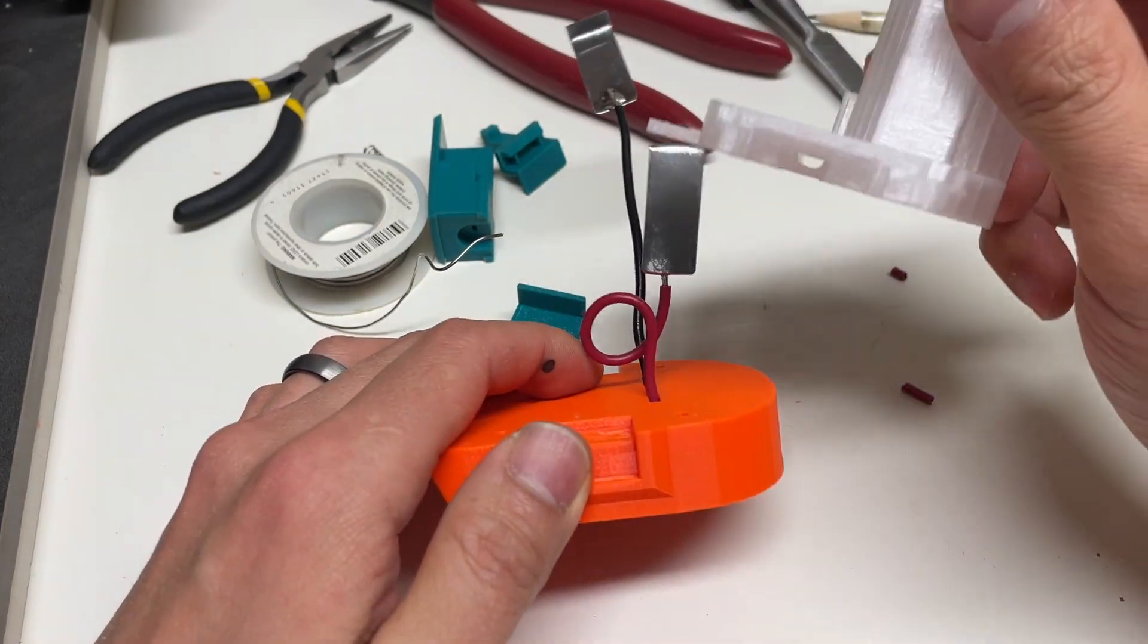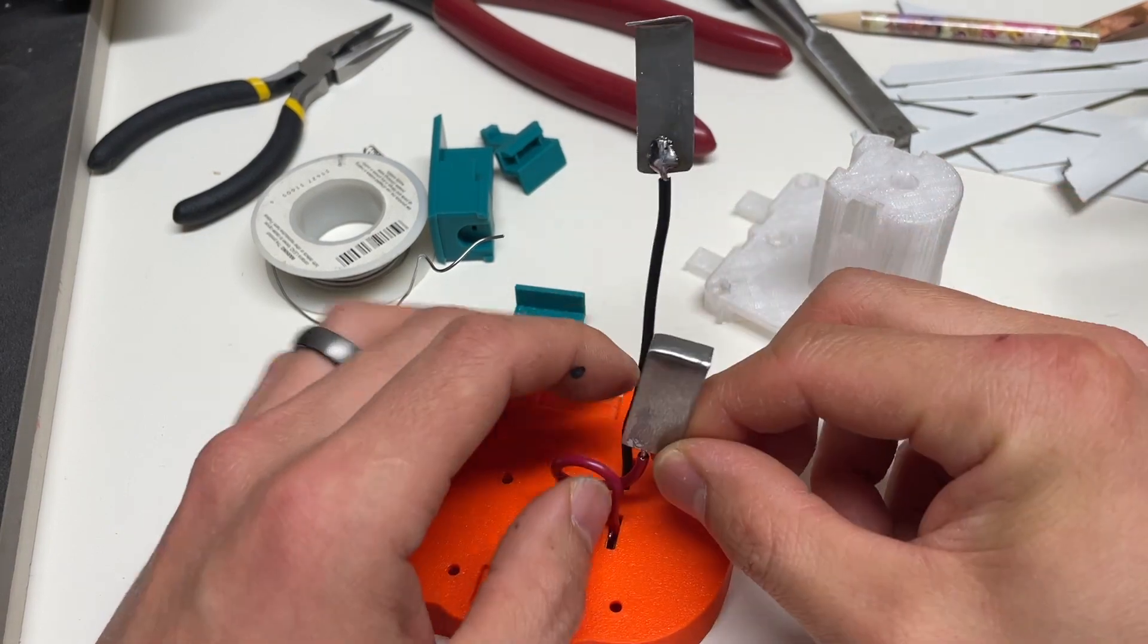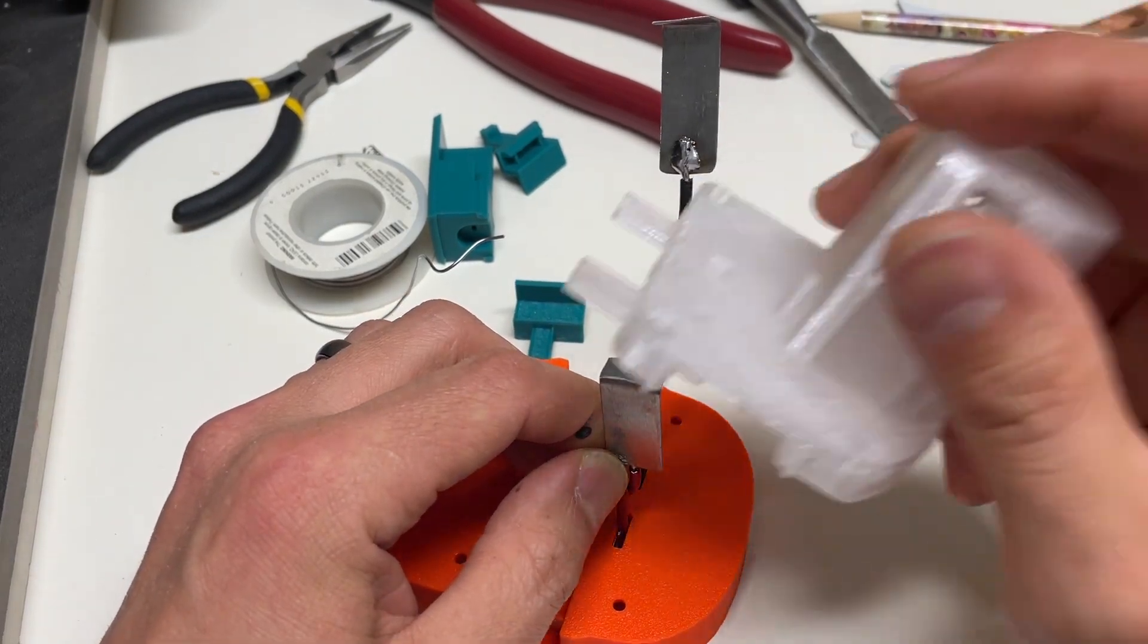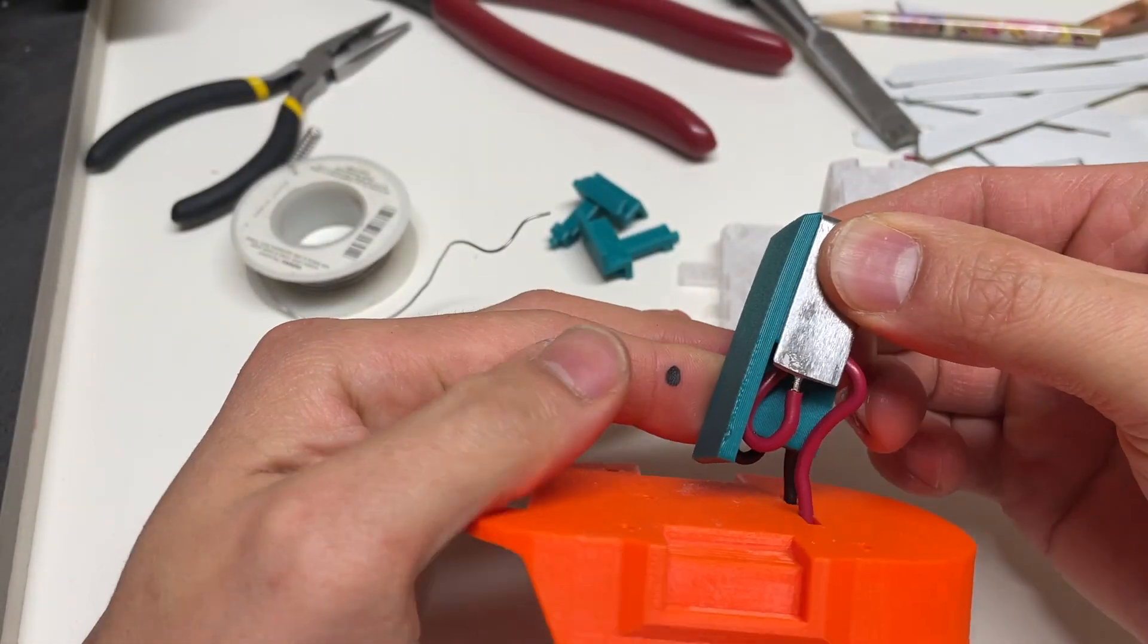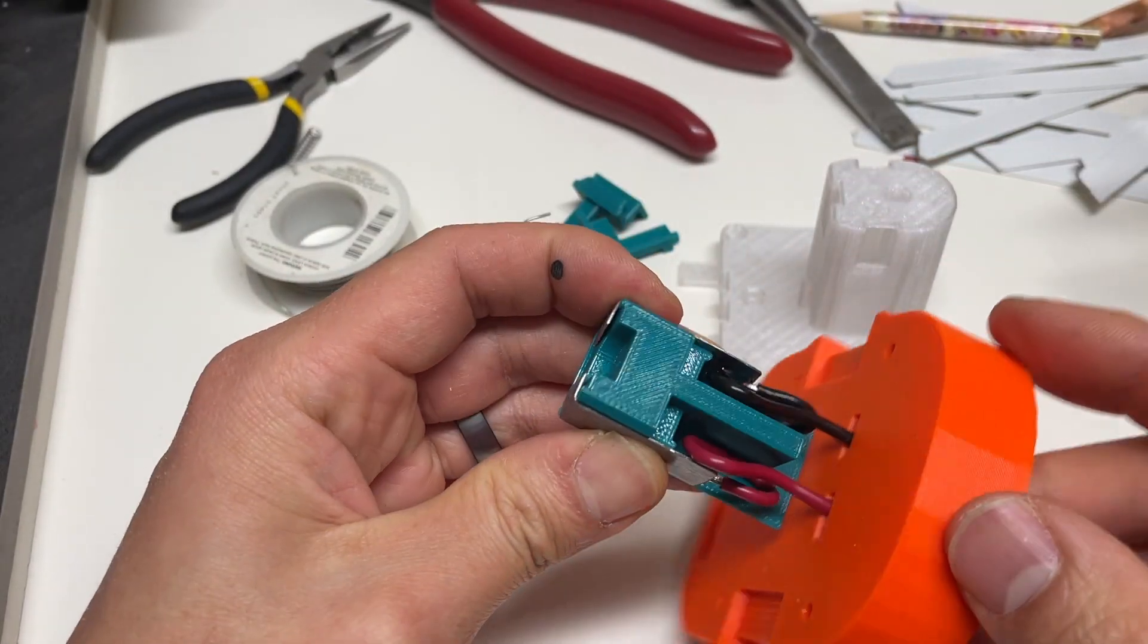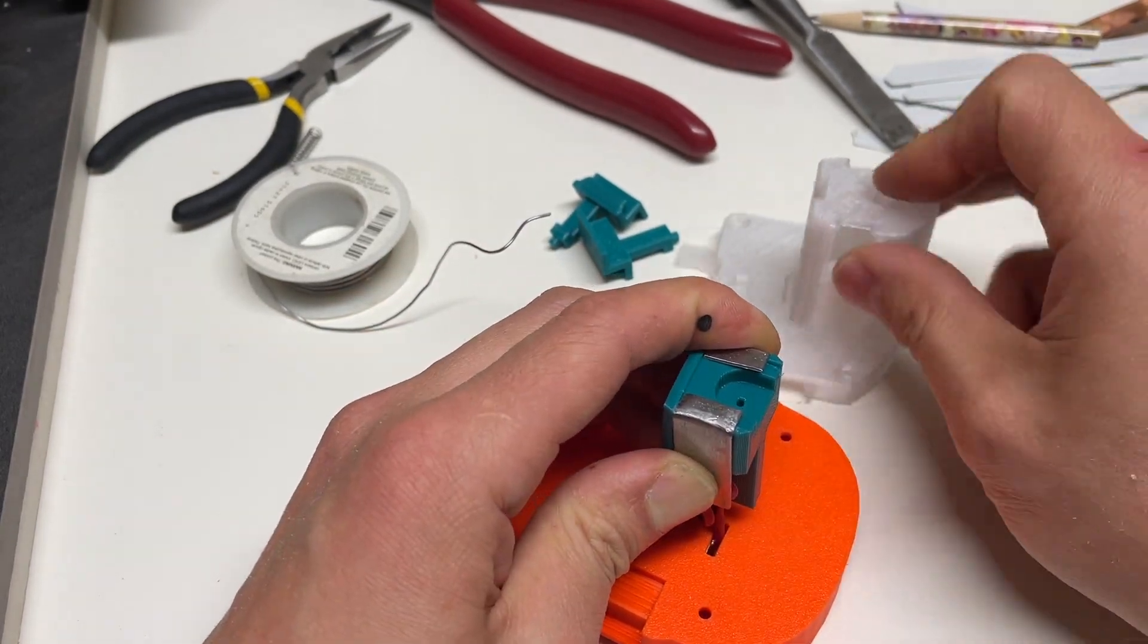This loop acts as a spring. Otherwise you need to solder the wire on perfectly and that's really difficult to do. So I find this method to work really well for me. Okay so it looks like that. Now we're ready to put this on.